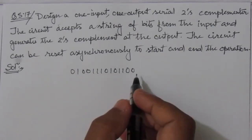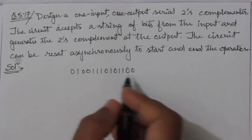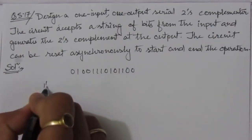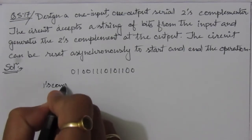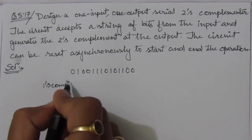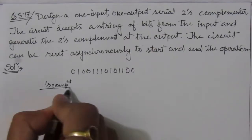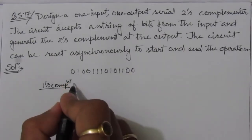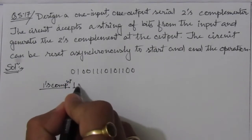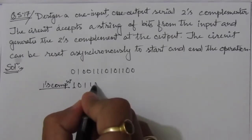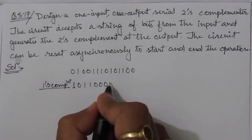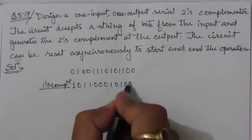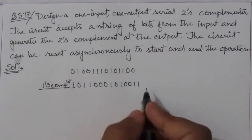First of all, let us find out the one's complement. For finding out one's complement, we have to just invert the bits. So the one's complement will be just the opposite: if it is zero it will be one, zero, one, one, zero, zero, zero, zero, one, zero, one, zero, zero, one, one. So this is the one's complement.